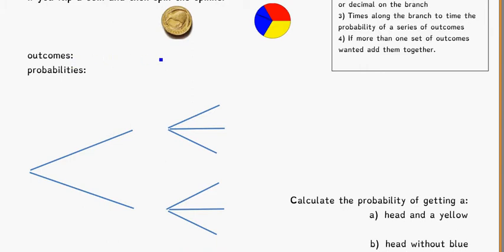A couple of things that are helpful to do first is to think about what the outcomes are. For a coin, I can get a head or a tail. The probability for a head is 1 half, and the probability for a tail is also 1 half. On the spinner, I can get red, yellow, or blue. Because the spinner is broken up into three equal pieces, I'm going to assume it's fair — that it's 1 third, 1 third, and 1 third probability for each of those.